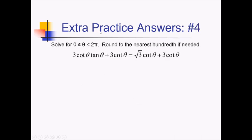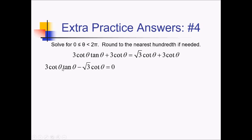On this problem, we're trying to solve for angles between 0 and 2 pi. This has a lot of moving parts and a lot of things all over the place. I'm thinking let's just try to get everything over to one side and see if we can do some kind of factoring. I notice that we have a 3 cotangent of theta on each side — subtracting from both sides, those cancel out nicely. Alongside that, I'm moving the radical 3 cotangent of theta over to the left side. So we end up with cotangent of theta times (3 tangent of theta minus radical 3 cotangent of theta) equals 0. Those 3 cotangent of thetas cancel, and I notice I have a cotangent of theta in each of these terms, so I can factor cotangent of theta out, leaving 3 tan of theta minus radical 3 inside the parentheses.